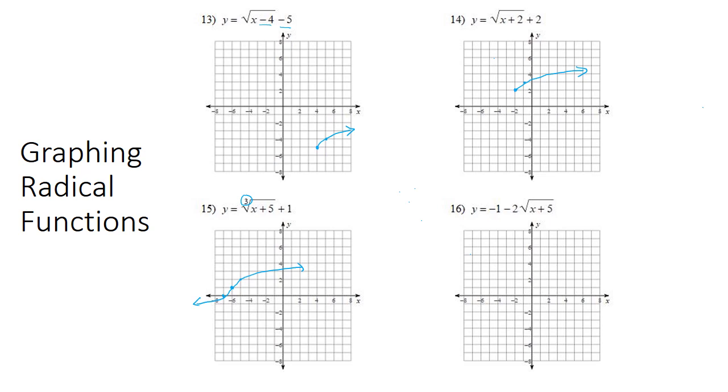Looking at number 16, it's not a cube root, so it's like a regular graph. Plus 5 on the inside means it goes to the left 5. This minus 1, we can kind of just move it to the end, so it's gone down 1. So left 5, down 1.